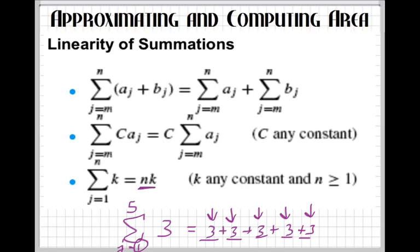You can just take the N and multiply it times the K. So, instead, you can just take the N, which is five in this case, that's the ending number, and then multiply it times the constant, which will give you 15, the same thing.